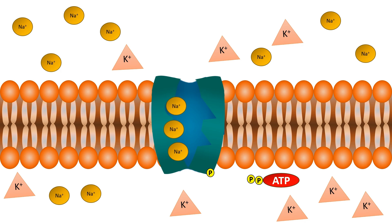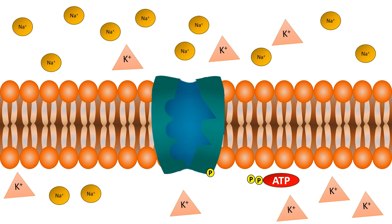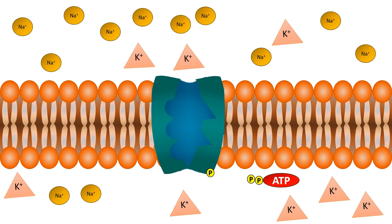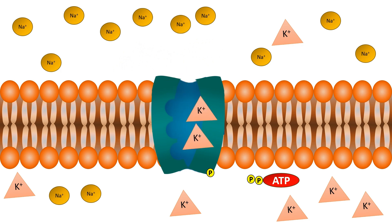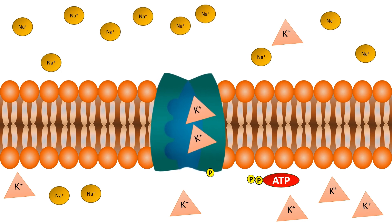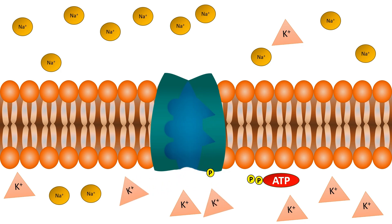Then, two potassium ions from outside the cell bind to the pump, and the pump returns to its original shape, releasing the potassium ions into the cell. This 3-2 exchange of sodium and potassium ions helps maintain the cell's membrane potential.